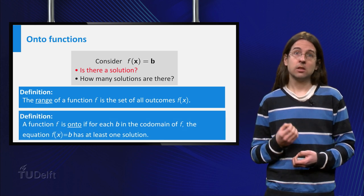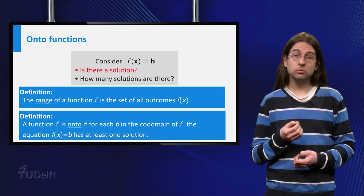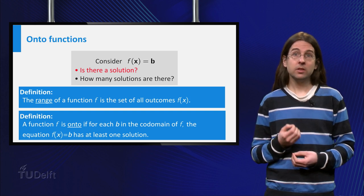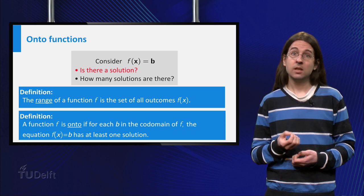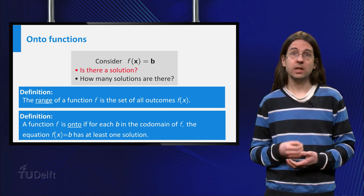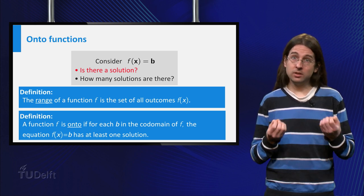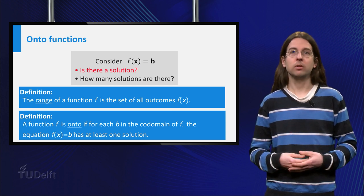If the range of a function covers the whole codomain, we say that the function is onto or surjective. Thus a function f is onto if the equation f(x) = b has a solution for all possible vectors b in the codomain. And our example is not onto because there is no solution to f(x) = (-1, 3, 2).